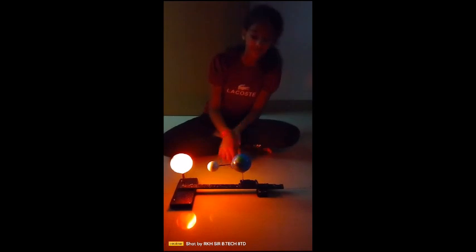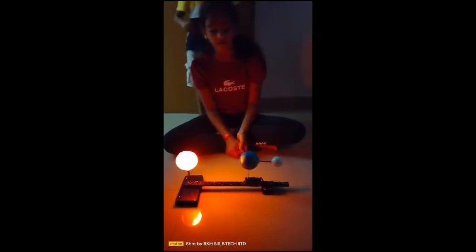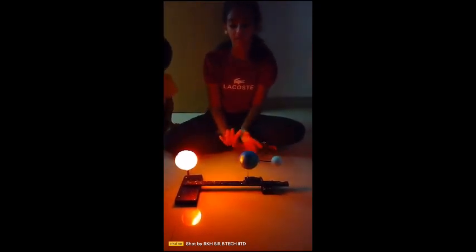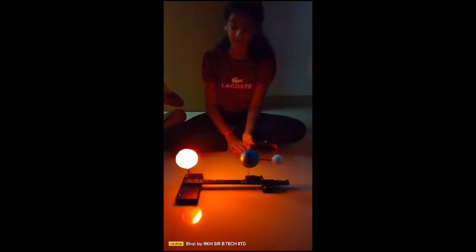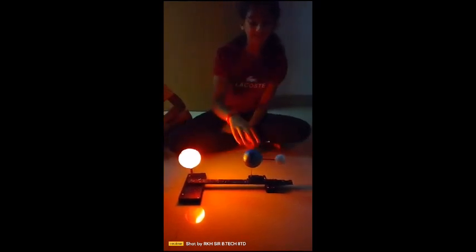Fifth point: lunar eclipse. It occurs when the Earth is between the Sun and the Moon and forms a shadow on the Moon's surface.